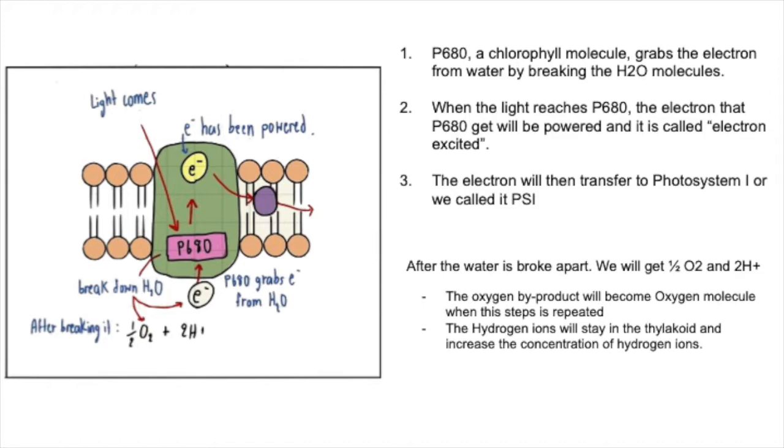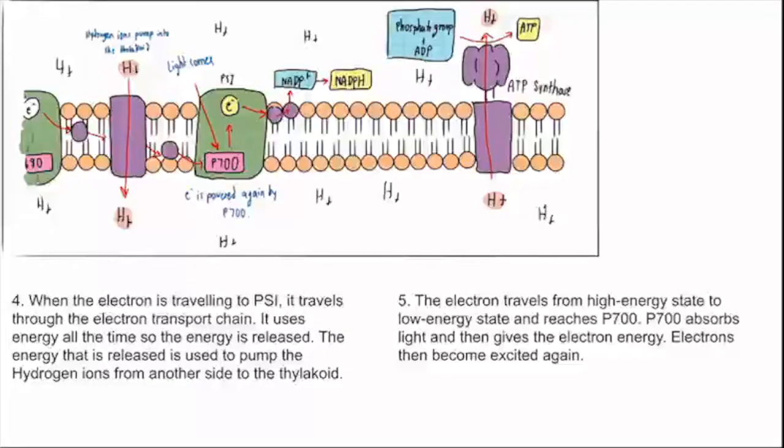After that, the electron will be transferred to Photosystem I or PS1. When the electron is traveling to PS1, it travels through the electron transport chain. It uses energy all the time because it travels all the time. So the energy is released. The energy that is released is used to pump the hydrogen ions from another side to the thylakoid.